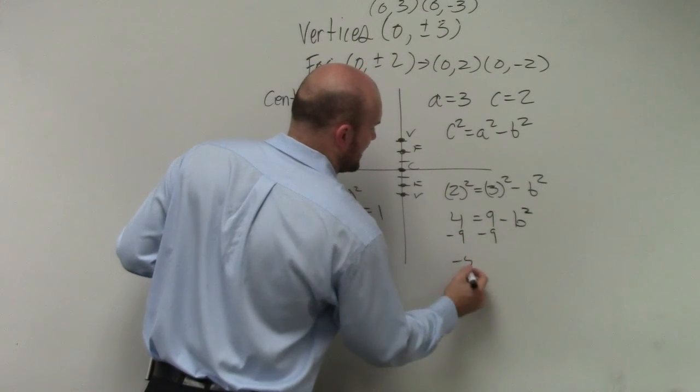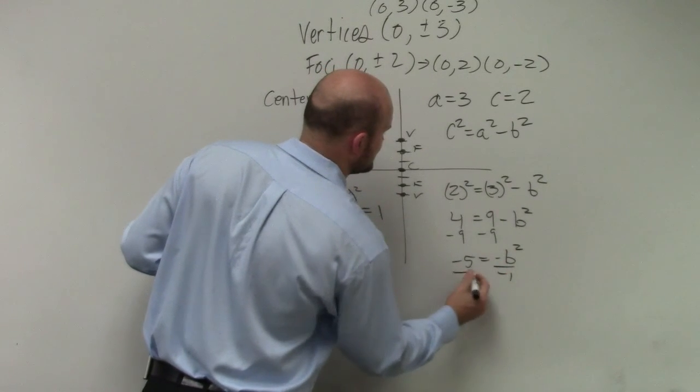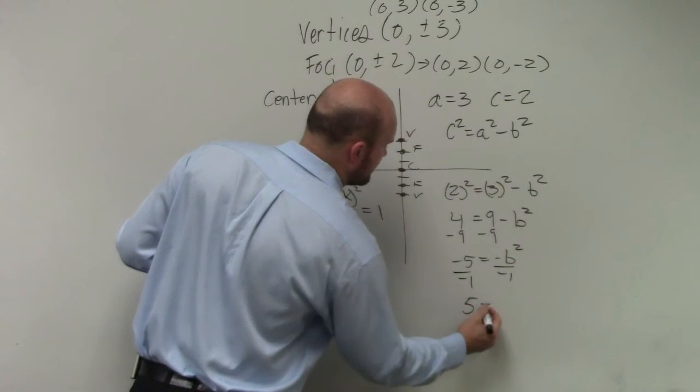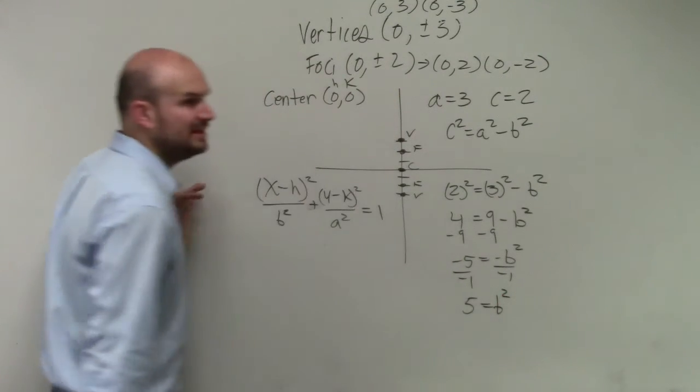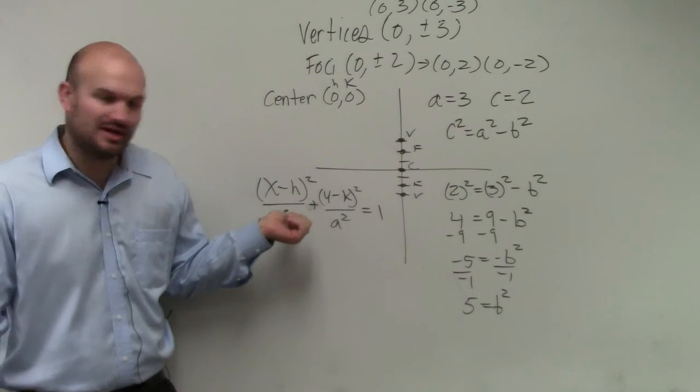Now, a big mistake a lot of students make is they go ahead and solve for b. Ladies and gentlemen, in this problem, we don't need to solve for b. Because what is the equation looking for? We just want b squared, right? So we're good.